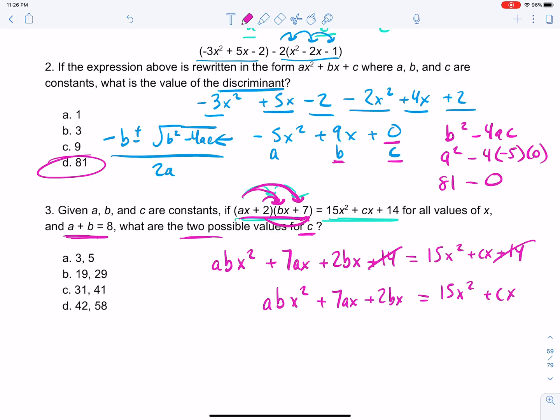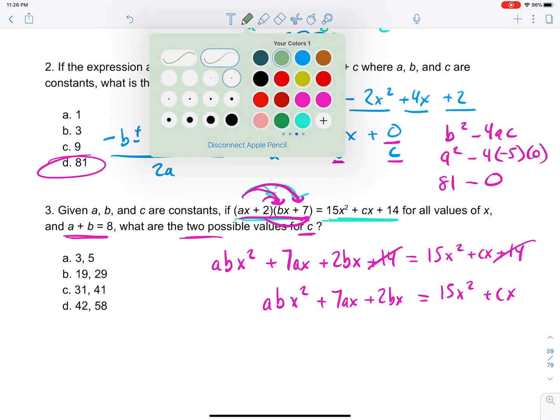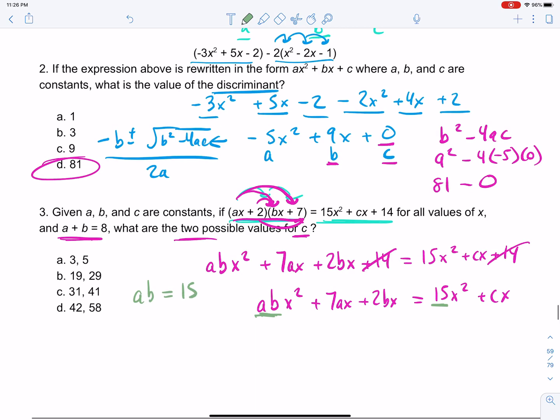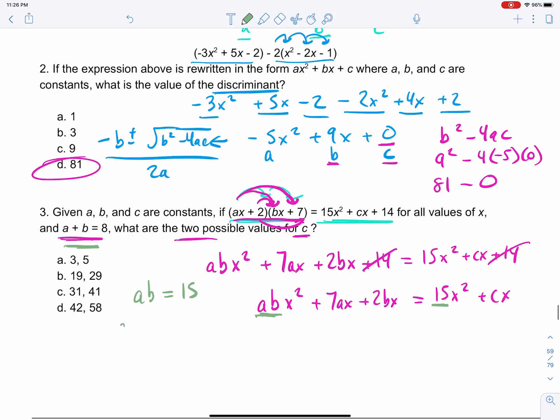So now we have abx² + 7ax + 2bx equals 15x² + cx. Now, here's what I'm going to do. I'm just going to point something out. Our ab is what's next to our x². So our ab is 15. Because those correspond. So ab is 15, and what else do we know? a + b is 8.